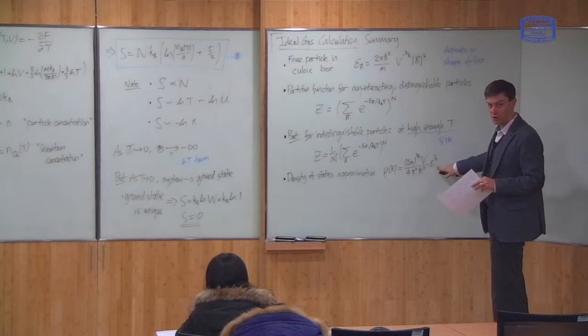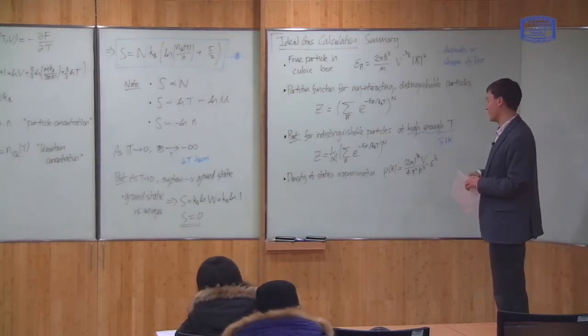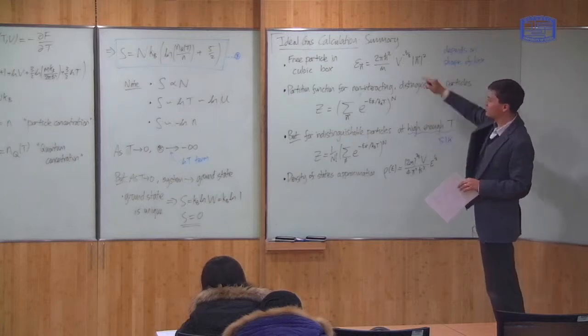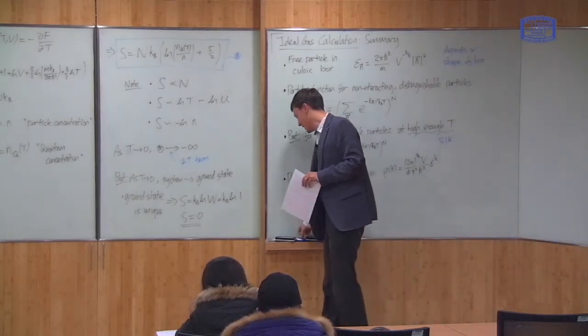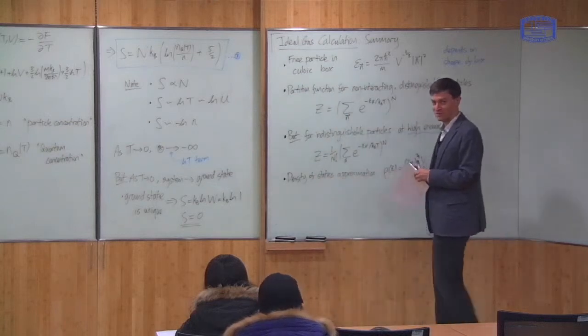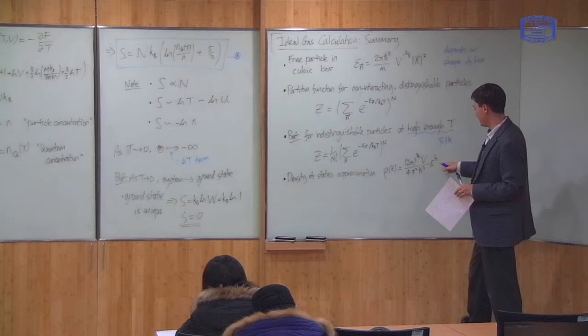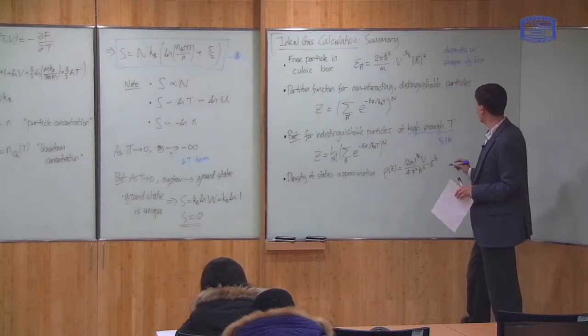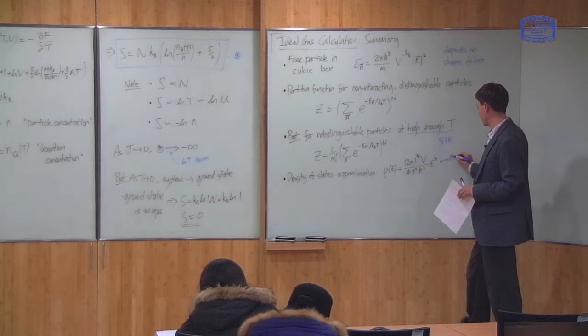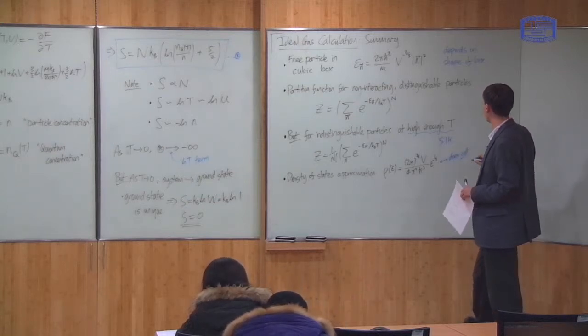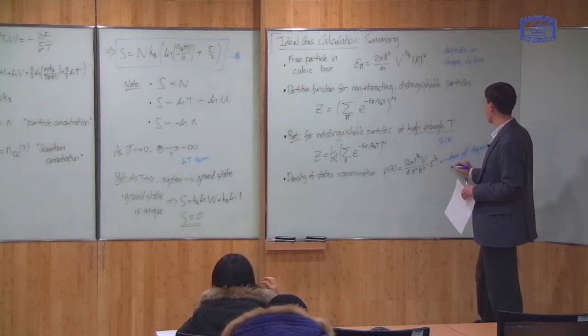We calculated the density of states ρ(ε) as being 2m^(3/2) times V divided by 4π²ℏ³ times ε^(1/2). And this result does not depend strongly on the shape of the box. In fact, to derive this result, we assume that the box is cubic, but you can show that whatever box shape you take, as long as it's not incredibly small of quantum size, this result is generally true. So, this result does not depend, at least not strongly, on the shape of the box.